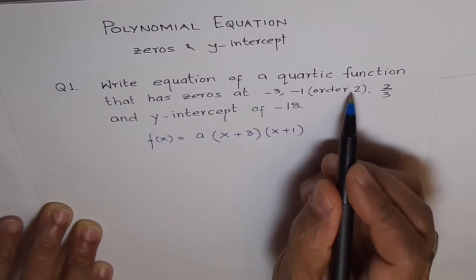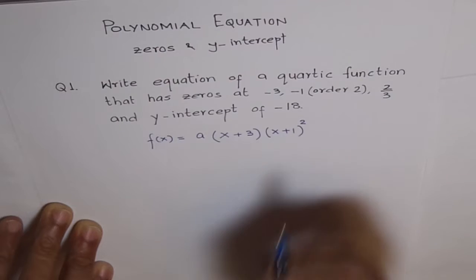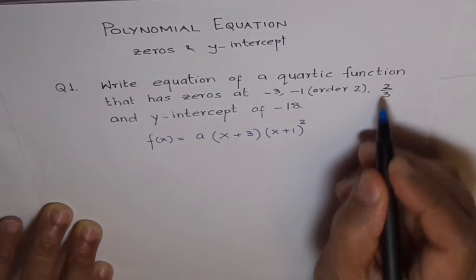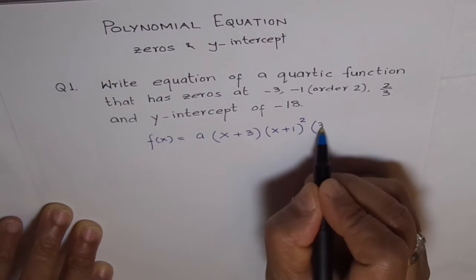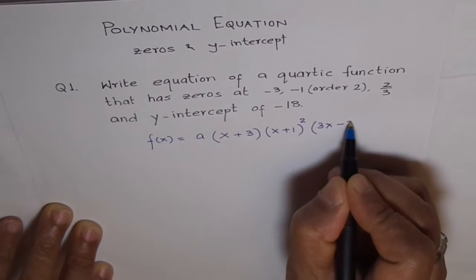Note, this zero is of order 2. Therefore, the degree will be 2 here. How about this? This will be 3x minus 2.